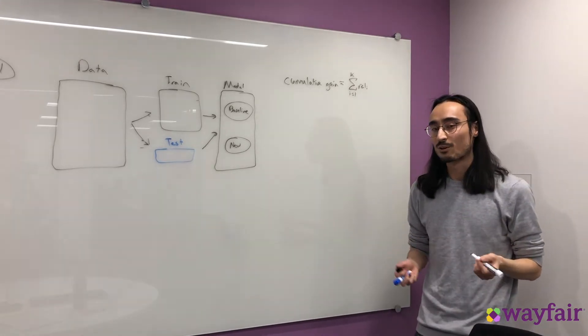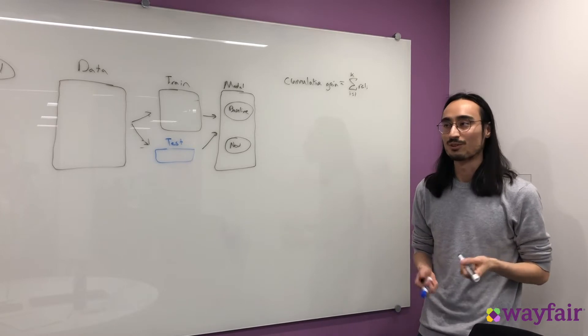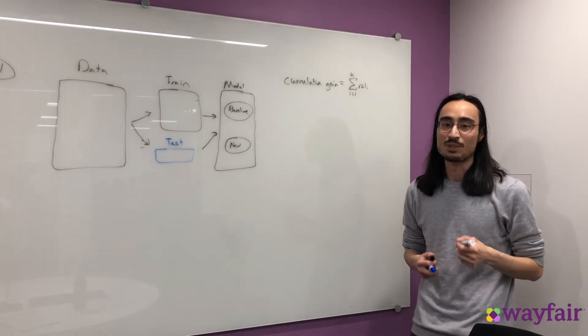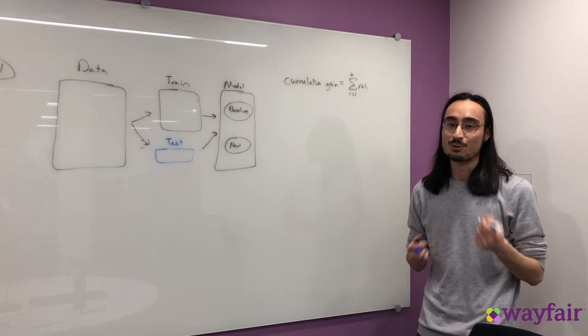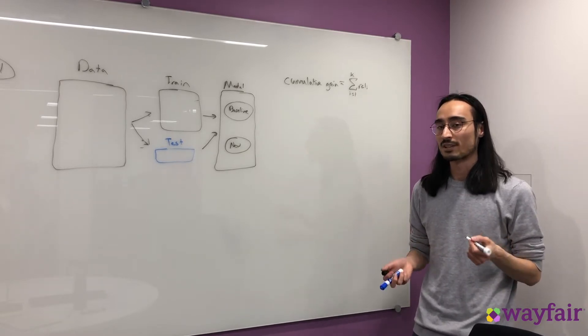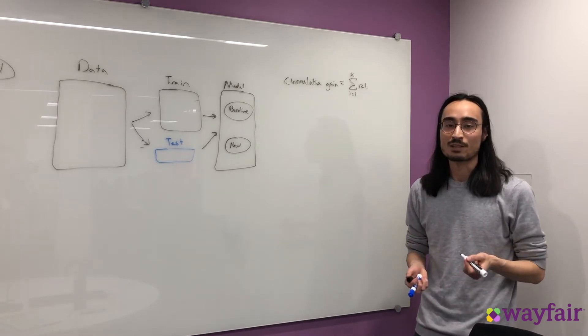The relevance score can be something really simple. So at Wayfair, the relevance score might be a binary where 1 is where the customer has viewed or added to cart a product at position i, and 0 if they haven't interacted with it.